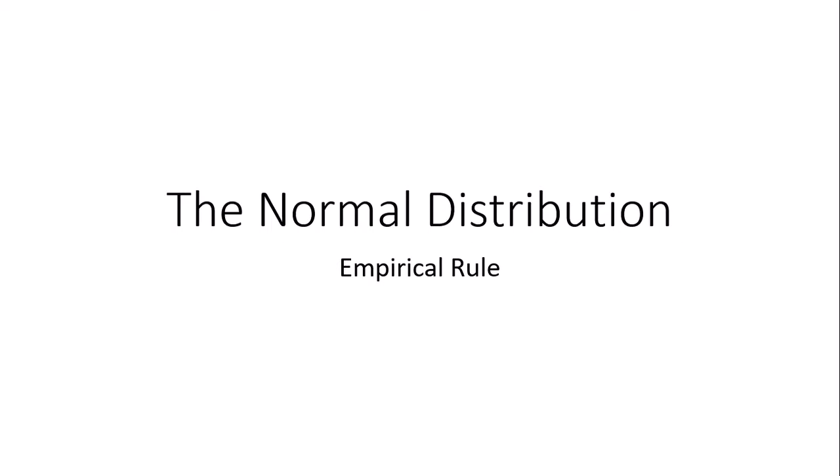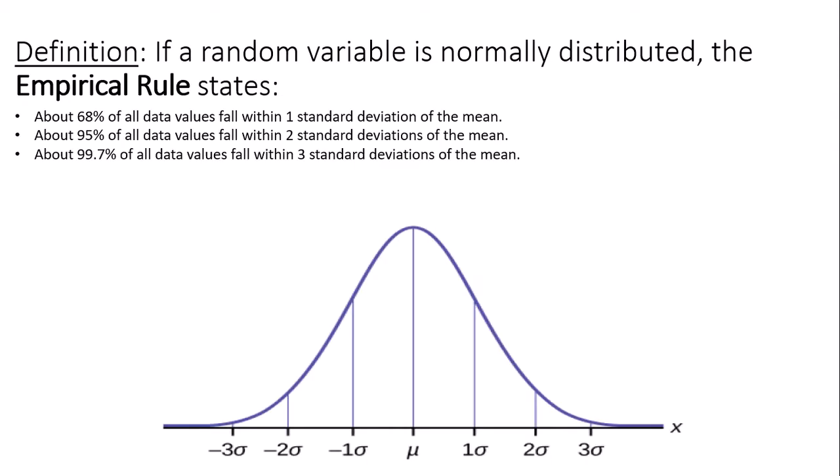This is a video about the empirical rule which applies to data which are normally distributed. If a random variable is normally distributed, the empirical rule states that 68% of the data values will fall within one standard deviation of the mean, 95% will fall within two standard deviations of the mean, and about 99.7% of all data values fall within three standard deviations of the mean.